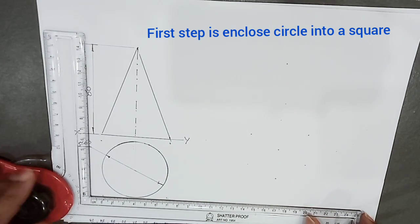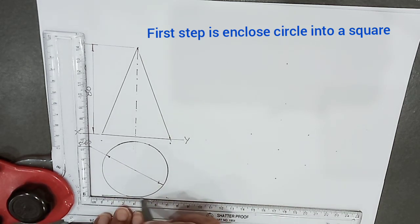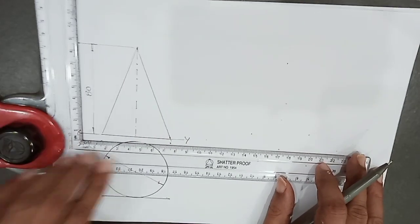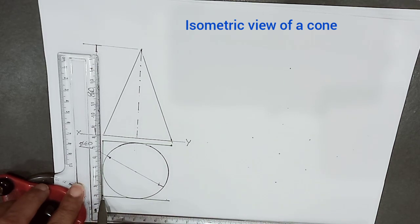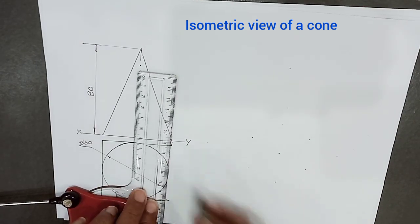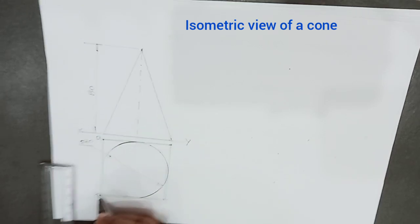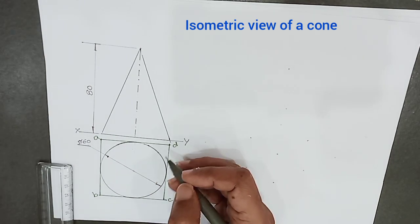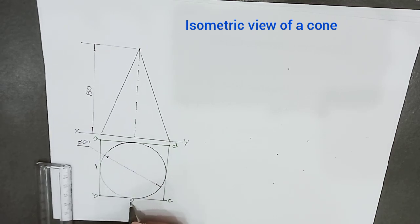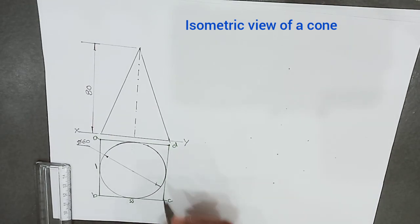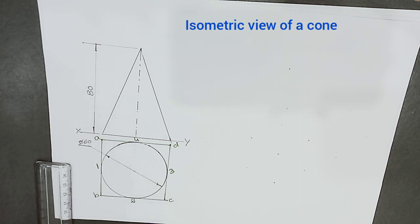We have to enclose the base of the cone, that is the circle, into a square ABCD. Points 1, 2, 3, and 4 are midpoints of AB, BC, CD, and DA, as well as intersection points of circle and square.